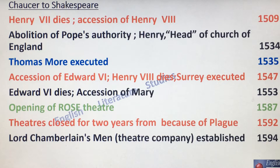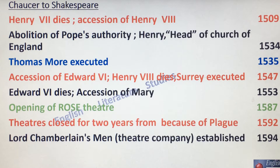Henry VII dies and accession of Henry VIII — that is in 1509. A violation of the Pope's authority, 1534.